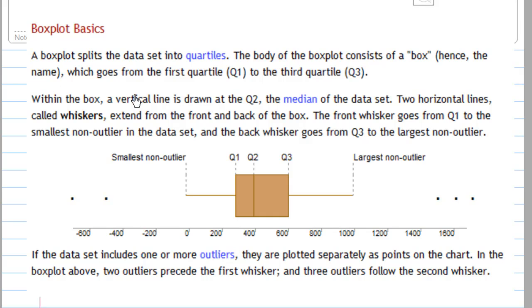Within the box, a vertical line is drawn at the Q2, the median of the data set. Two horizontal lines, called whiskers, extend from the front and back of the box. The front whisker goes from Q1 to the smallest non-outlier in the data set, and the back whisker goes from Q3 to the largest non-outlier.